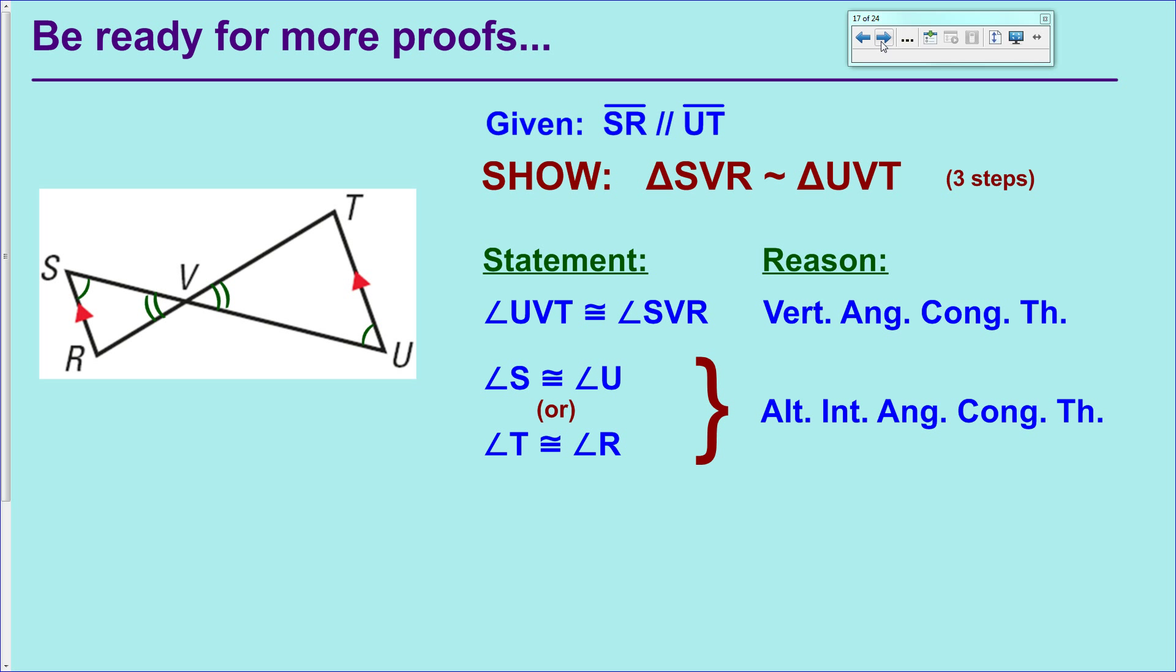So you only need one of those two statements, but the reasoning is the same for either. And once you have those two angles being congruent, you've got the AA Similarity Postulate to reach your conclusion there.